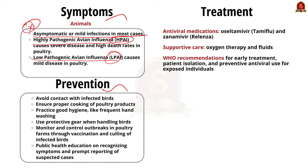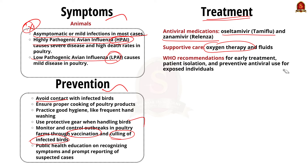Preventing bird flu involves several key measures: avoiding contact with infected birds, ensuring proper cooking of poultry products, practicing good hygiene like frequent hand washing, and using protective gear when handling birds. Monitoring and controlling outbreaks in poultry farms through vaccination and culling of infected birds are crucial. Public health education on recognizing symptoms and prompt reporting also helps prevent spread. Treatment for bird flu includes antiviral medications like oseltamivir (Tamiflu) and zanamivir (Relenza). The WHO recommends early treatment, isolation of patients, and preventive antiviral use for exposed individuals.